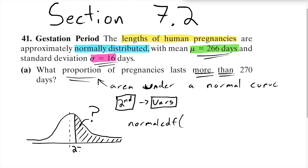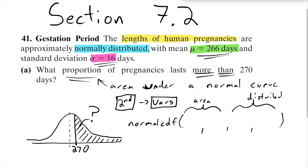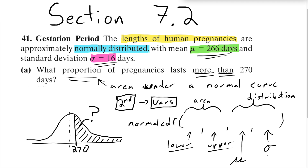I need to label 270 on the picture — not a really good picture without that. Normal CDF needs four numbers: the first two define the interval for the area, and the second two define the distribution. Your calculator may refer to them as the lower and upper. The third number is always the mean and the fourth is always the standard deviation. We want to start at 270 — that's our lower bound.